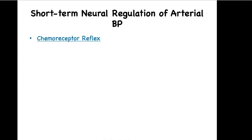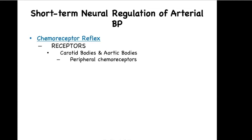Let's look at some short-term neural regulations of arterial blood pressure involving chemoreceptors — the chemoreceptor reflex. It will work much the same way. The receptors are located near the baroreceptors; they are called the carotid bodies and the aortic bodies. Since these chemoreceptors are part of the peripheral nervous system, we'll call them peripheral chemoreceptors. You also have another set of chemoreceptors located within the medulla, part of the central nervous system, called central chemoreceptors. The peripheral chemoreceptors are monitoring the levels of oxygen, carbon dioxide, and the pH of the blood.